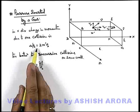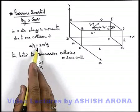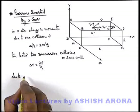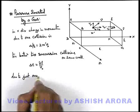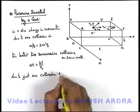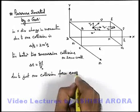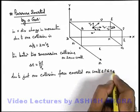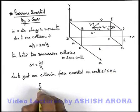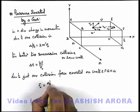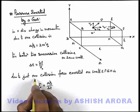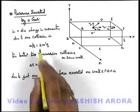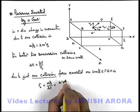So if this is the transfer of momentum or change in momentum due to a collision, and this is the time between two collisions, then we can write the force exerted on wall EFGH due to just one collision. The force exerted in the x direction can be written as delta p_x divided by delta t. Substituting the values, the twos cancel out and it becomes m' v_x squared divided by l.